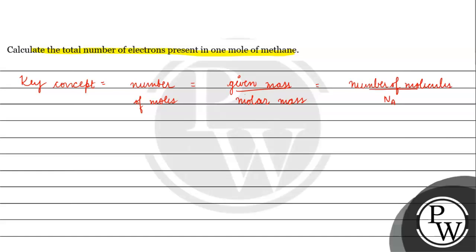If one mole of methane is equal to a certain number of molecules, then one mole of methane has 6.022 × 10²³ molecules.